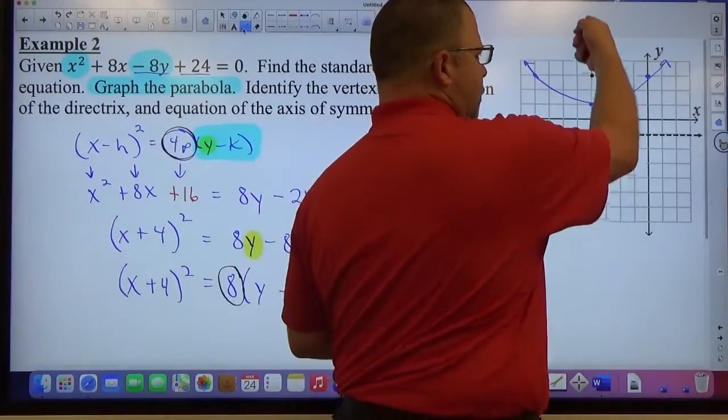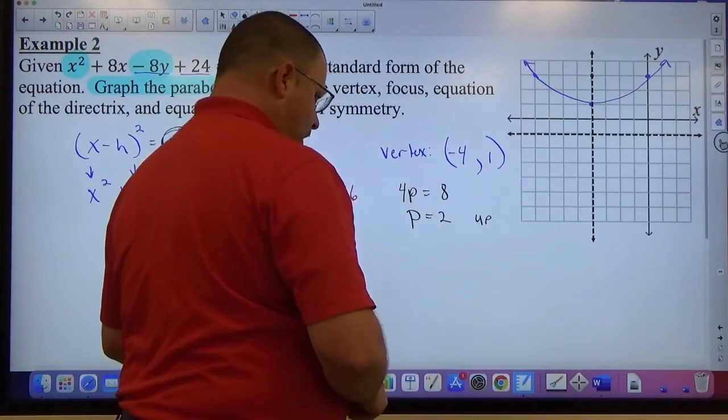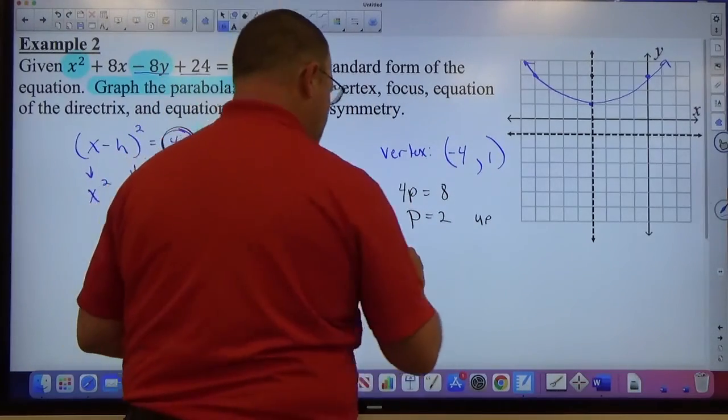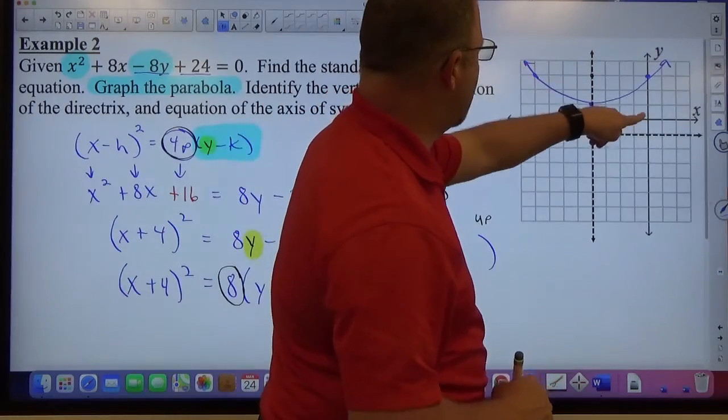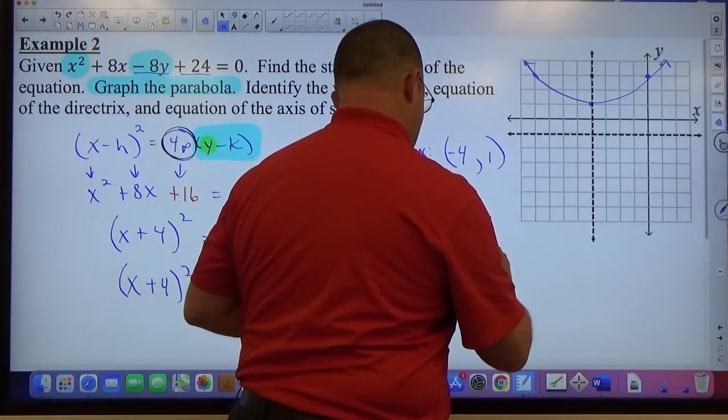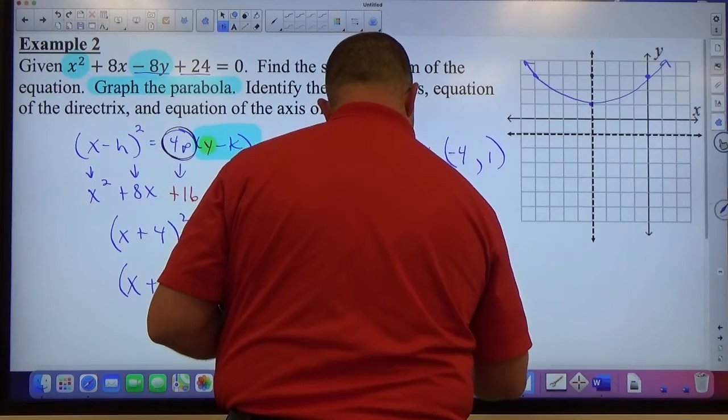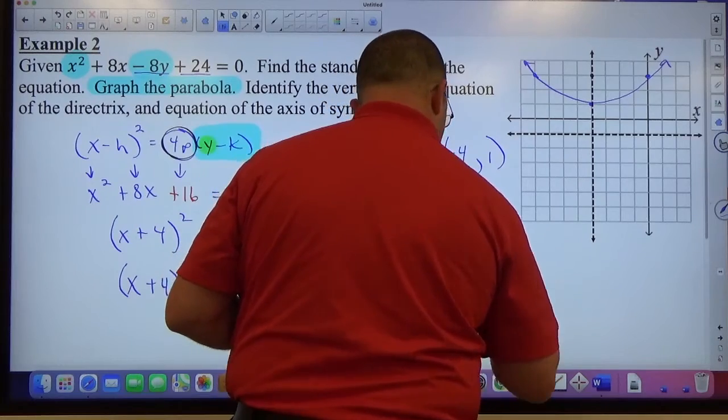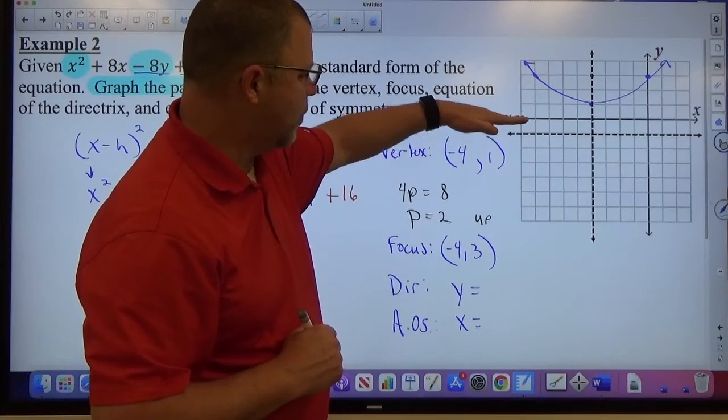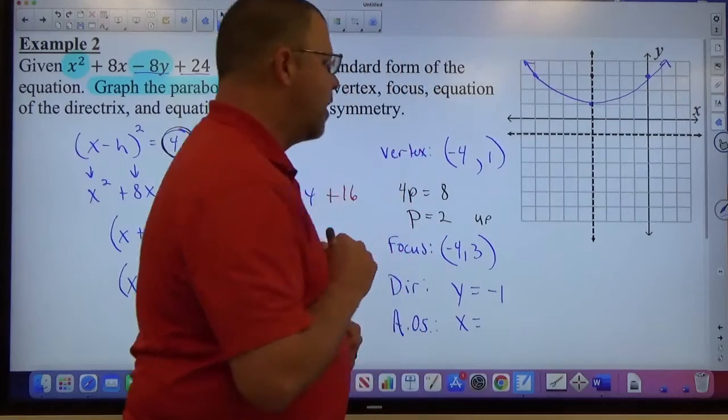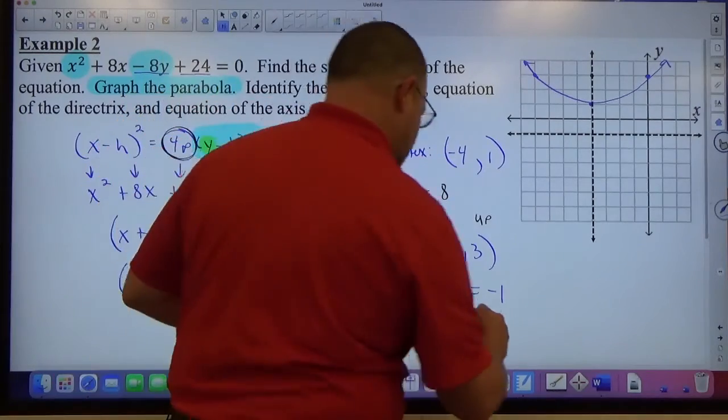And finally, we throw an axis of symmetry in just right through the focus and vertex. Just put a dashed vertical line. And then we have to identify all this stuff. So vertex is negative 4, 1. The focus is 2 up from there, so it's negative 4, 3. The directrix equation is y equals a number. The axis of symmetry equation is x equals a number. The y equals is where the height of this is. So this is the x-axis, we go down 1. That's y equals negative 1.